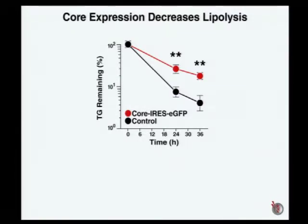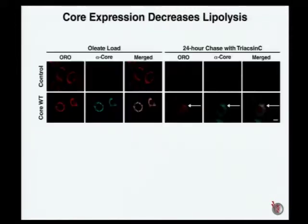We found that in the core-expressing cells, the rate of lipolysis — the turnover of lipid droplets — is significantly delayed. In the immunofluorescence pictures, after 24 hours the control cells have basically no lipid droplets left, while the core-expressing cells have bundles of lipid droplets remaining. All of these lipid droplets are coated with the core protein, underscoring the model that core coating prevents these lipid droplets from being turned over. When we use the mutant that does not localize to lipid droplets, we also have no protective effect.